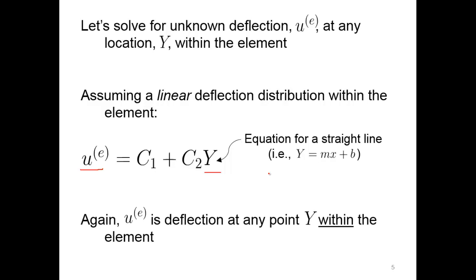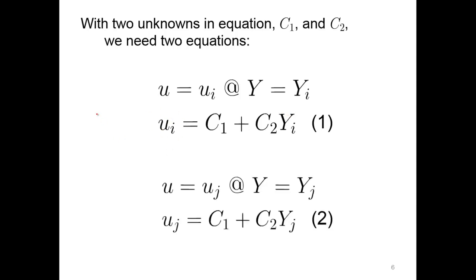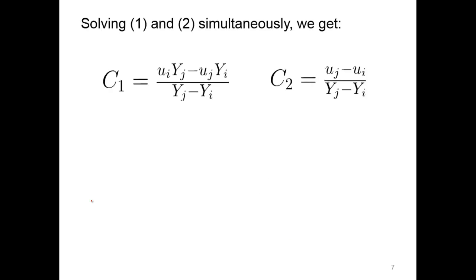The deflection is at any point y within the element — any point between nodes i and j. With two unknowns c1 and c2, we need two equations. We say the deflection u equals ui at location y equals yi, so at node i we have that deflection. And we have the deflection uj at location y sub j, substituting the location and deflection at that node. Those are our two equations, which we solve simultaneously to get c1 and c2. Now we can plug those back into our original displacement equation.